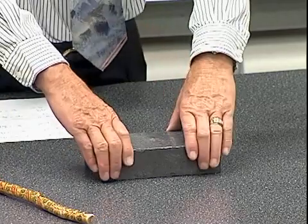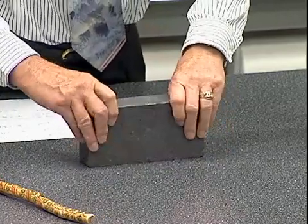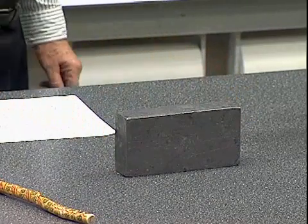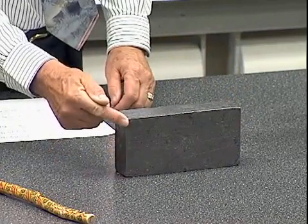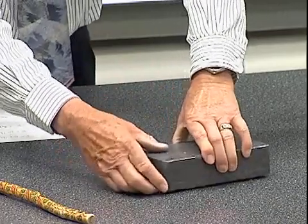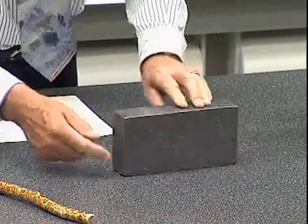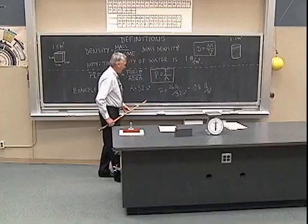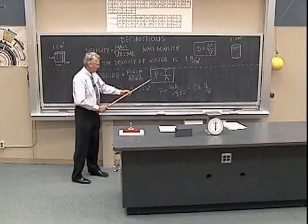Now, if we take that block and turn it on end this way, it turns out to cut the area in half. Now, instead of 4 inches across the edge here that we had originally, we now have 2 inches by 8 inches, or 16 square inches, half of the area that we had before.